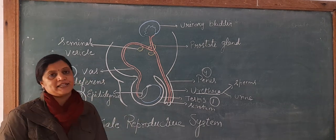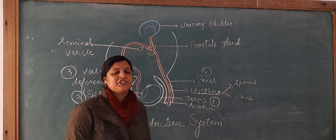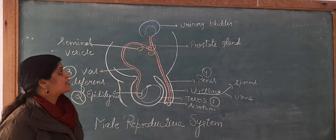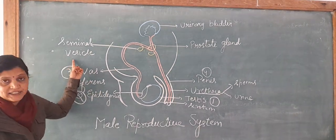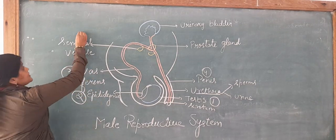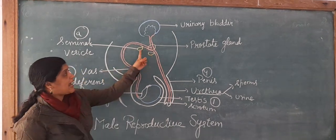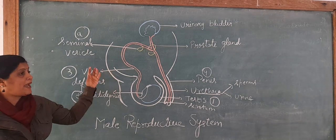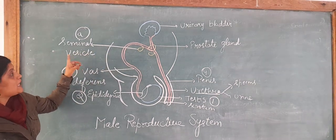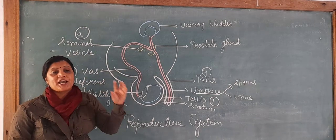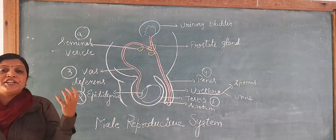Now we will discuss accessory glands — glands which assist the main parts. There are three accessory glands present in the male reproductive system. The first accessory gland is the seminal vesicle — a pair of irregular pouch-shaped glands present in the male reproductive system, which secrete a whitish colored fluid that activates and nourishes the sperms.